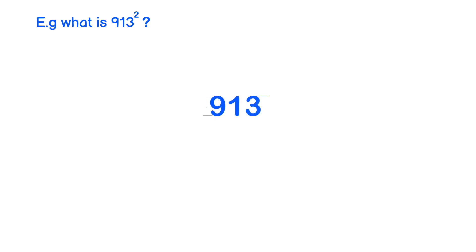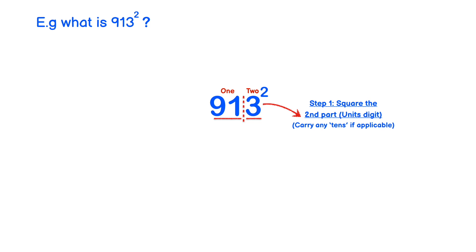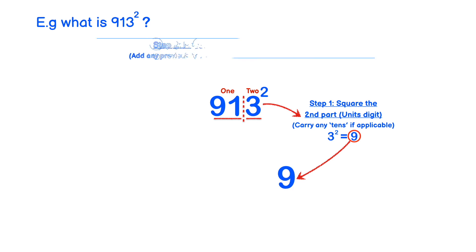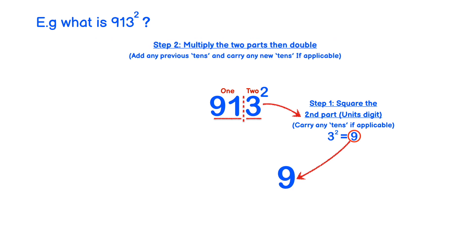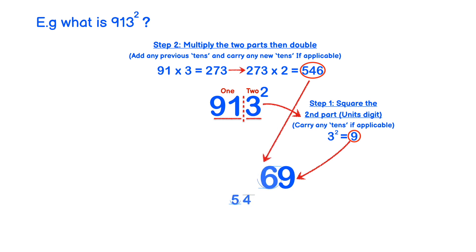Let's take a look at another example. What is 913 squared? We split the number up into two sections, section 1 and section 2. In step 1, we square the second section or the units digit. In this case we have 3. So 3 squared equals 9 and we put that directly in the answer line. In step 2, we multiply the two sections together, add any previous tens, and carry any new tens. So we do 91 times 3 which gives us 273. Doubling 273 gives us 546. So we put 6 in the answer line and we carry the 54 across.